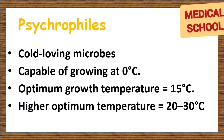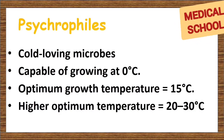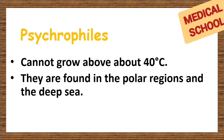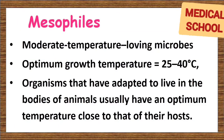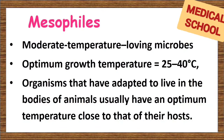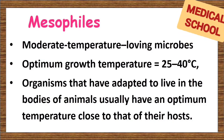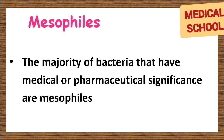Psychrophiles are cold-loving microbes capable of growing at 0°C, with an optimum growth temperature of about 15°C. Higher optimum temperatures are usually 20–30°C and they cannot grow above about 40°C. They are found in polar regions and the deep sea. Mesophiles are moderate temperature-loving microbes with an optimum growth temperature of 25–40°C. They are the most common type of microbe. Organisms adapted to live in animal bodies usually have an optimum temperature close to that of their host. The majority of bacteria with medical or pharmaceutical significance are mesophiles.